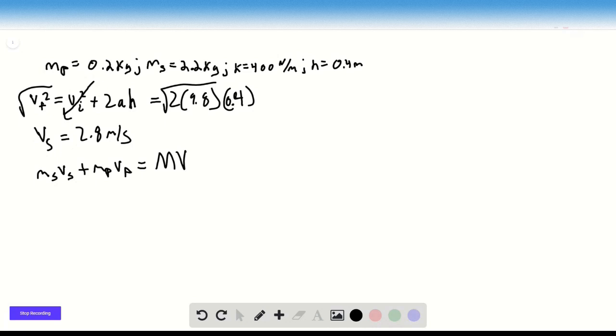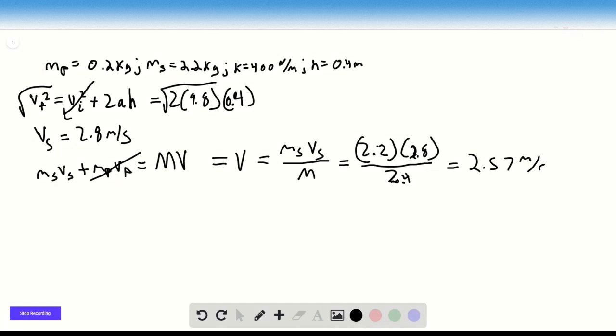Well, the mass of the pan is 0, so what we end up with is that V will equal MS VS over the total mass. So this is 2.2 times 2.8 over 2.4, which equals 2.57 meters per second.